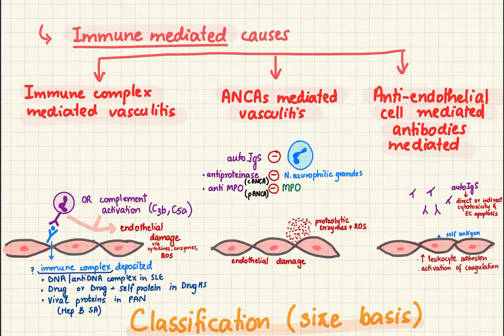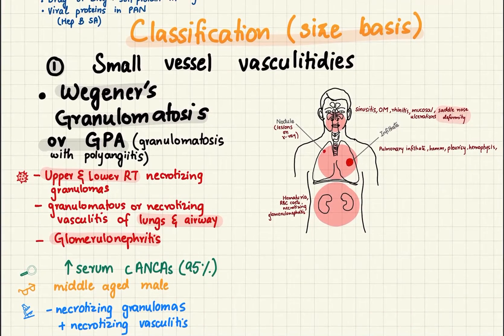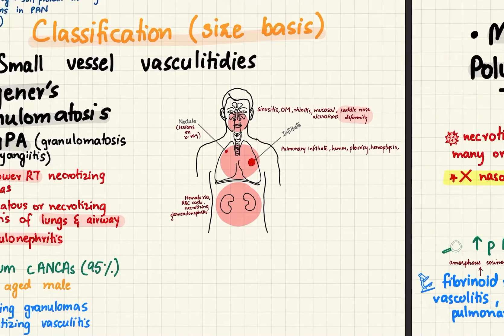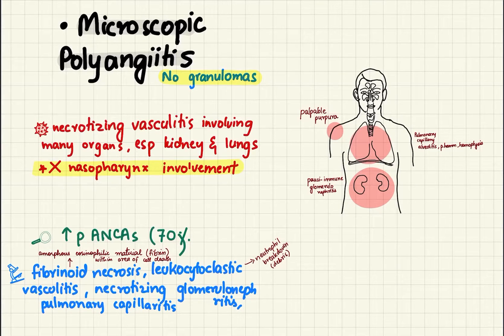Classifying by vessel size, small vessel vasculitides come first. Wegener's granulomatosis, or GPA (Granulomatosis with Polyangiitis), affects the upper and lower respiratory tract and kidneys, leading to respective symptoms. Middle-aged males are most commonly affected. Diagnosis involves increased serum c-ANCA in 95% of cases — remember c-ANCA for upper and lower respiratory tract involvement and glomerulonephritis.